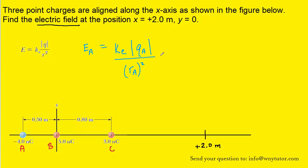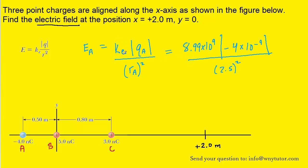We can go ahead and plug in the known values. For the value of K, we have substituted 8.99 times ten to the ninth — the standard value for the Coulomb constant. We can pick up our calculators and crunch this number, noticing that the absolute value will leave the quantity overall positive. The unit for the electric field is newtons per coulomb.